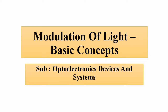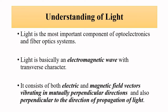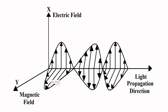In an optoelectronic or optical communication system, the main signal-carrying entity is a light wave. Light is an electromagnetic wave which consists of vibrating electric and magnetic field vectors.